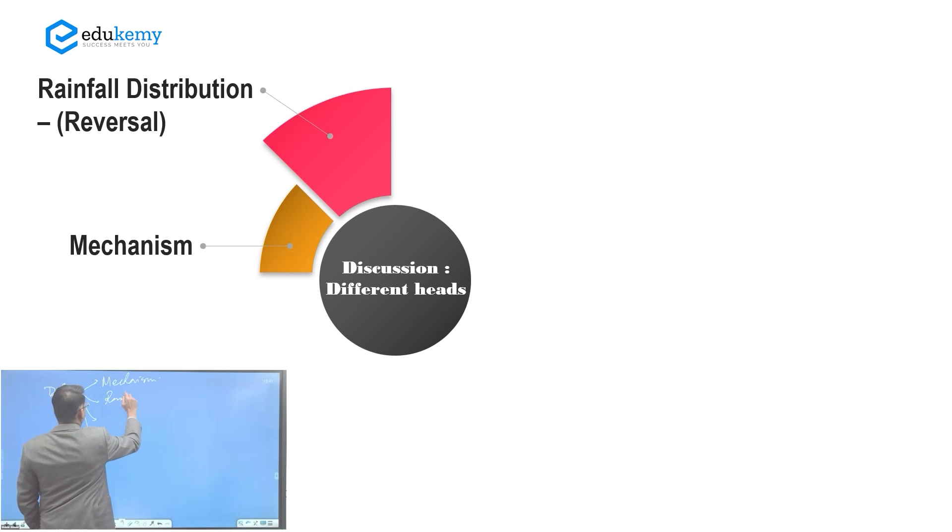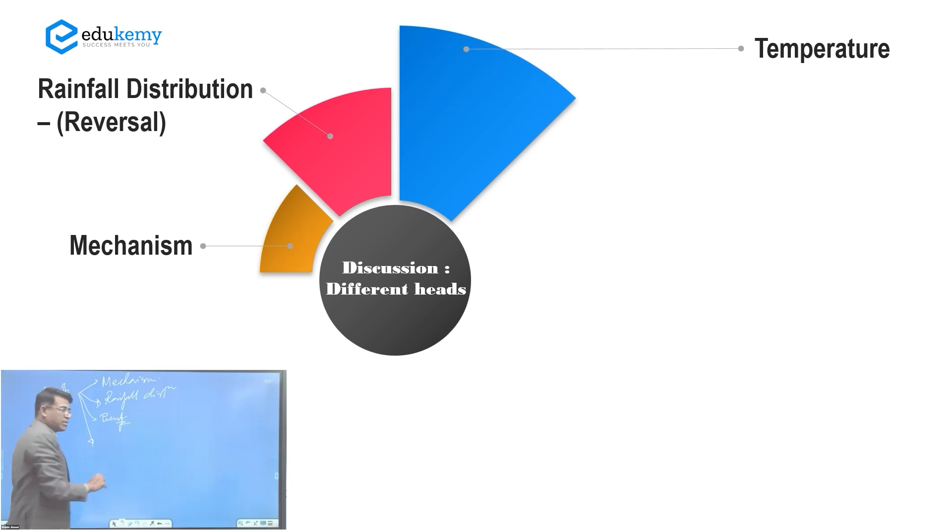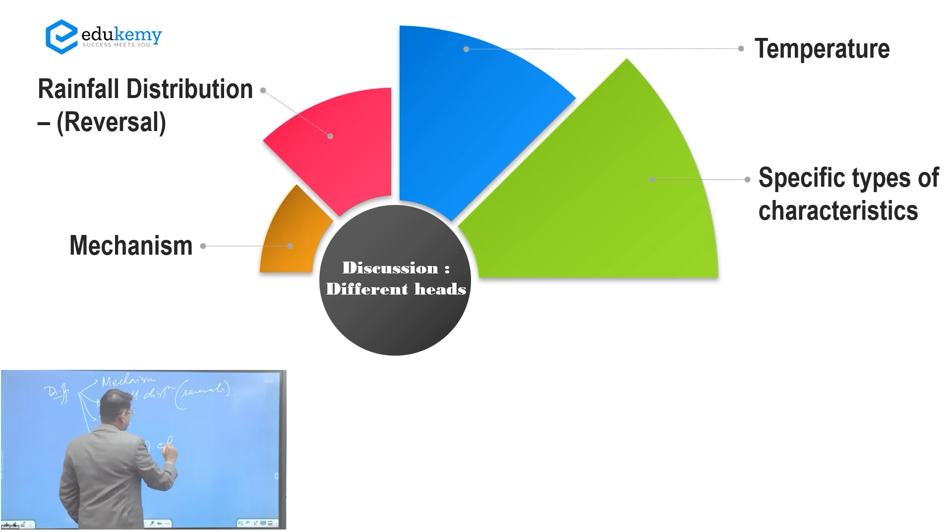One is the mechanism. You'll talk about the mechanism. What else? Rainfall distribution. Link to this you can also talk about average temperatures. So rainfall distribution, but at that time you can talk about the reversal, how effective the reversals are, and maybe discuss certain specific types of characteristics. You can also add impact.